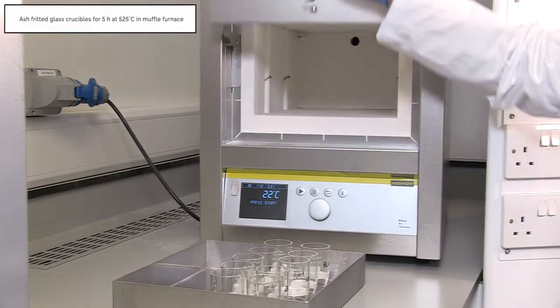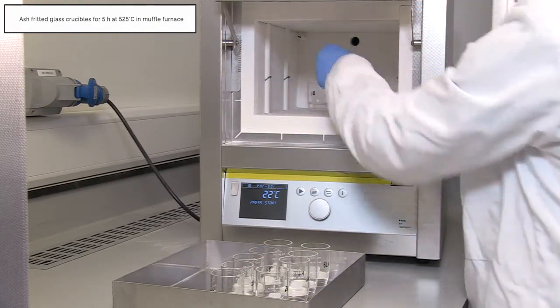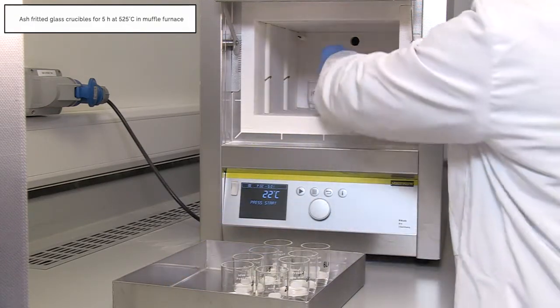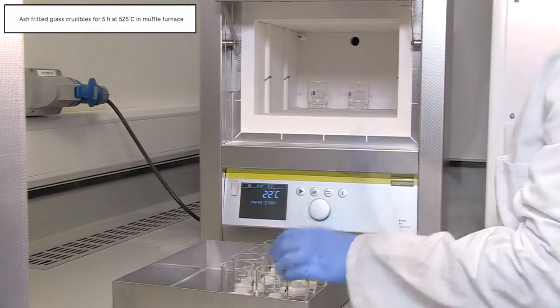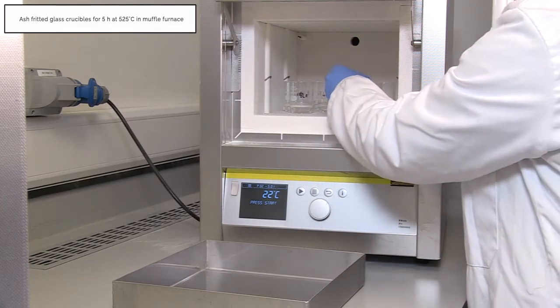Ash fritted glass crucibles for five hours at 525 degrees Celsius in a muffle furnace. After five hours, the furnace is programmed to cool to room temperature.